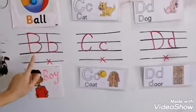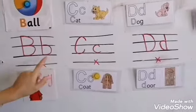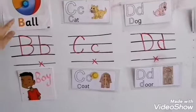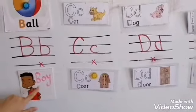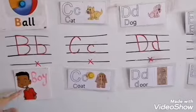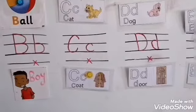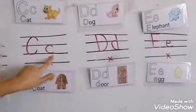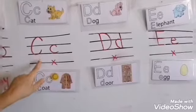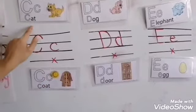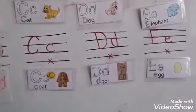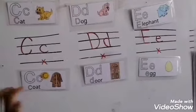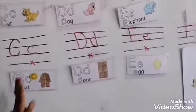Capital B, small b. B, b — ball, boy. Capital C, small c — cat, coat.